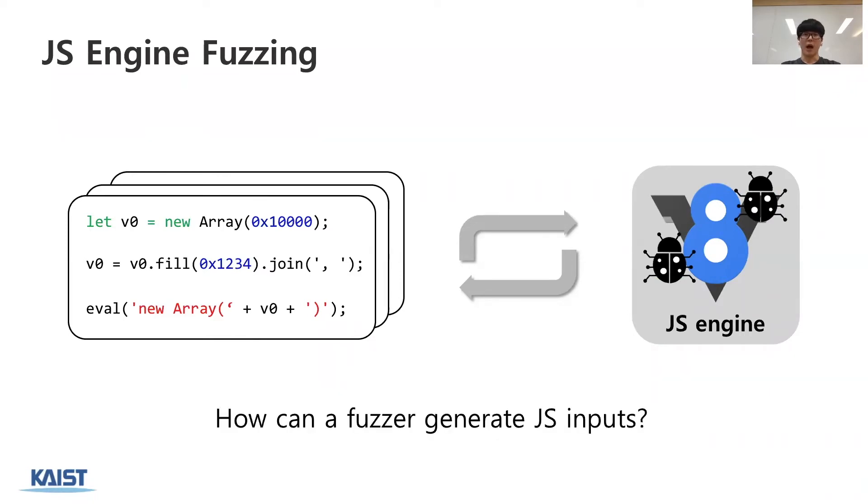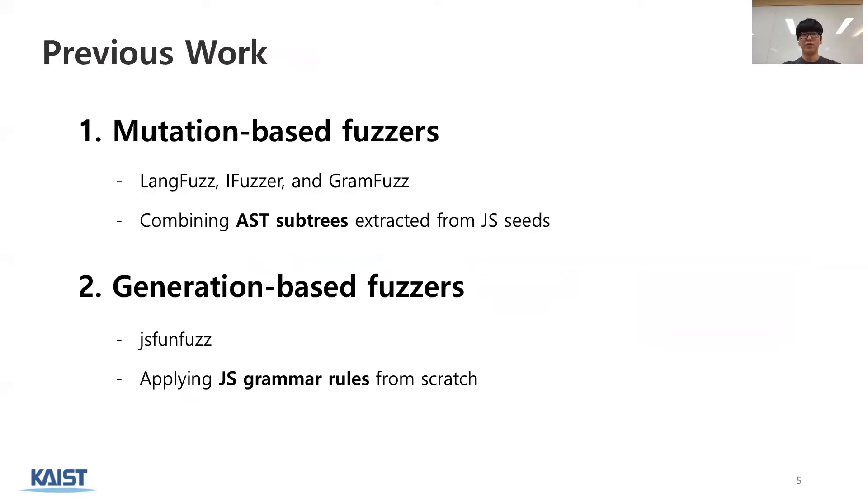So, how can these fuzzers generate JS code? There are two different types of a fuzzer in terms of generating JS code. Mutation-based and generation-based fuzzers. Mutation-based fuzzers, such as LangFuzz, randomly combine AST subtrees extracted from seed JS. On the other hand, generation-based fuzzers, such as JSFunFuzz, simply apply JS grammar rules from scratch.